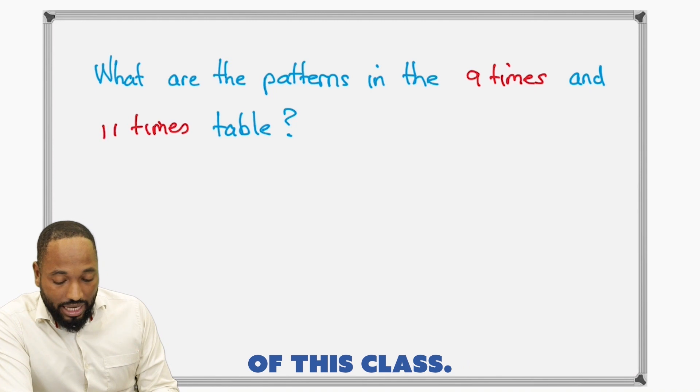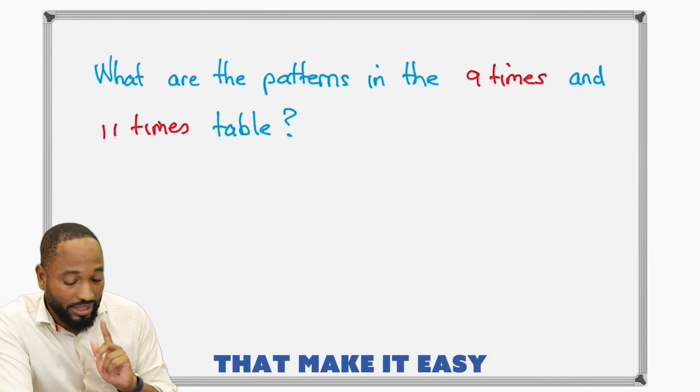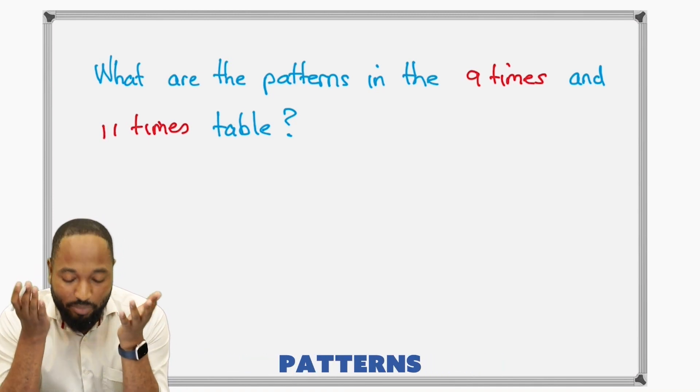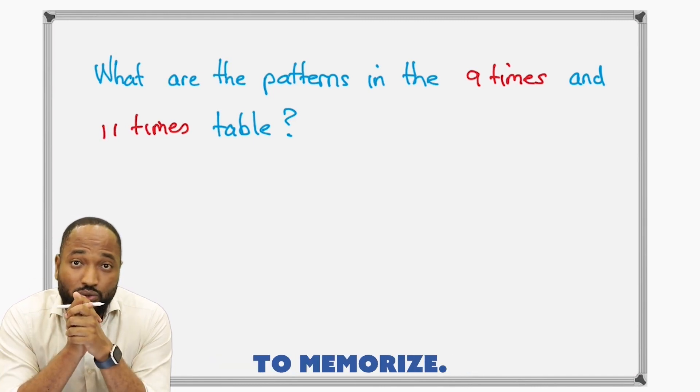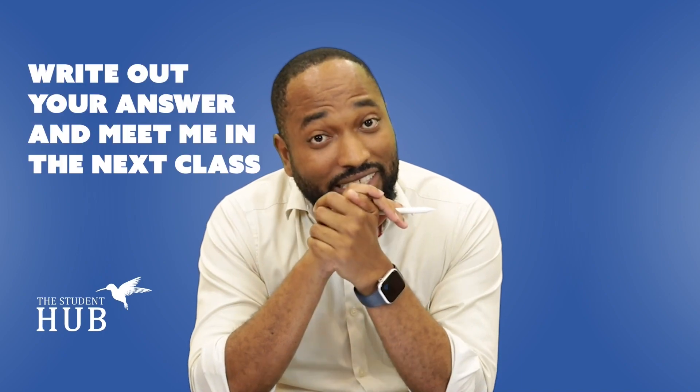Well, we have come to the end of this class. What are the patterns in the 9 times and 11 times table that make it easy to remember? That's the question I want to leave you with. What are the patterns in the 9 times table and 11 times table that make it so easy to memorize? So write out your answer and meet me in the next class.